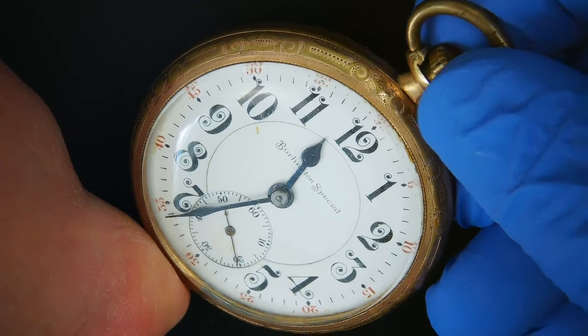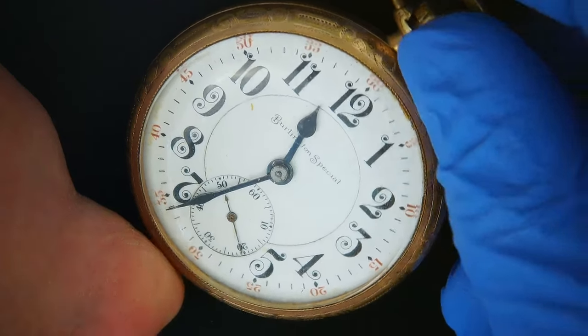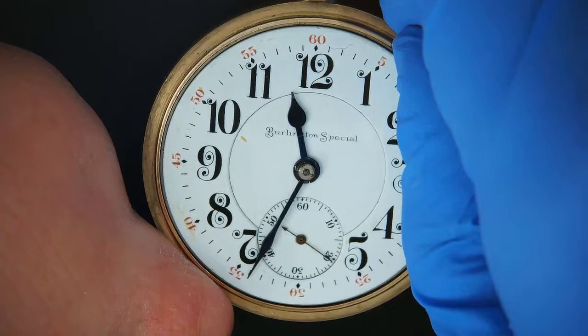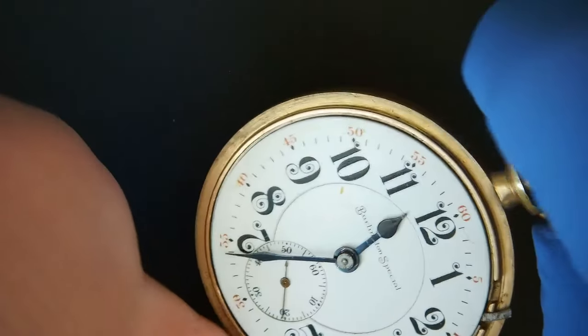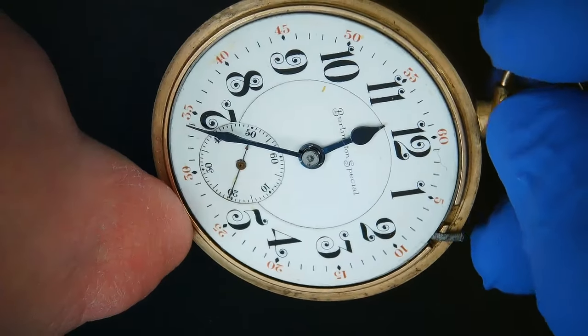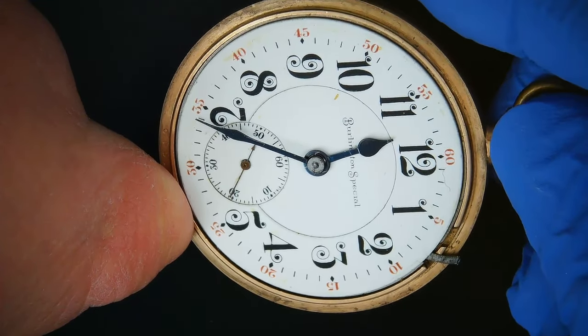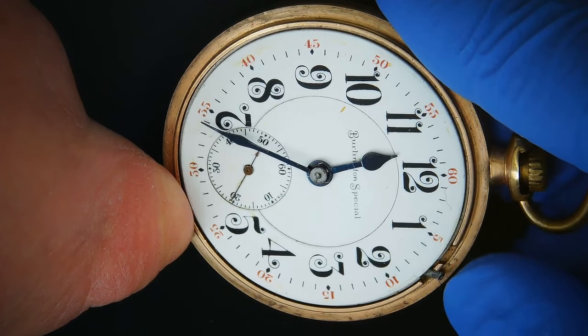The watch is refusing to wind. Let's test the time setting. Since this is a lever set watch, we'll remove the bezel. The time setting is jammed as well. It's not working.